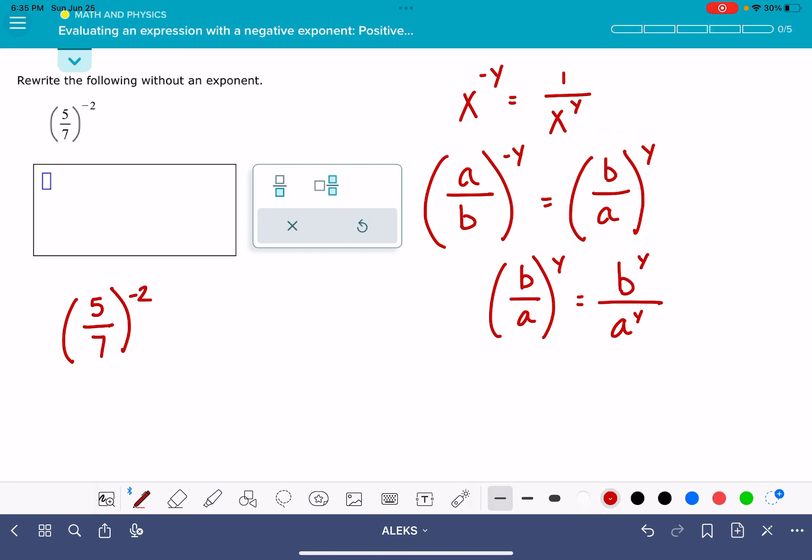It's going to allow us to change that negative 2 to a positive 2. We're just going to take the reciprocal or swap the numerator for the denominator. That allows us to change the sign on the exponent to a positive.